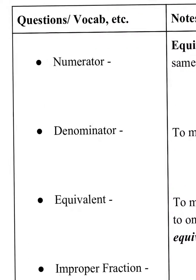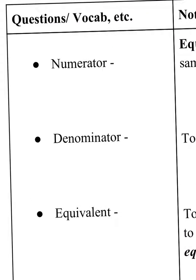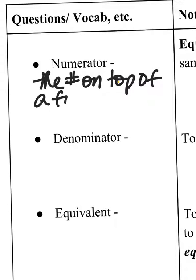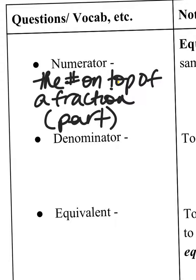Let's do some vocab first. So my numerator—let's start with numerator—my numerator is the number on top of a fraction and this is the part of the fraction. You have a part and a whole, so the numerator is the part.